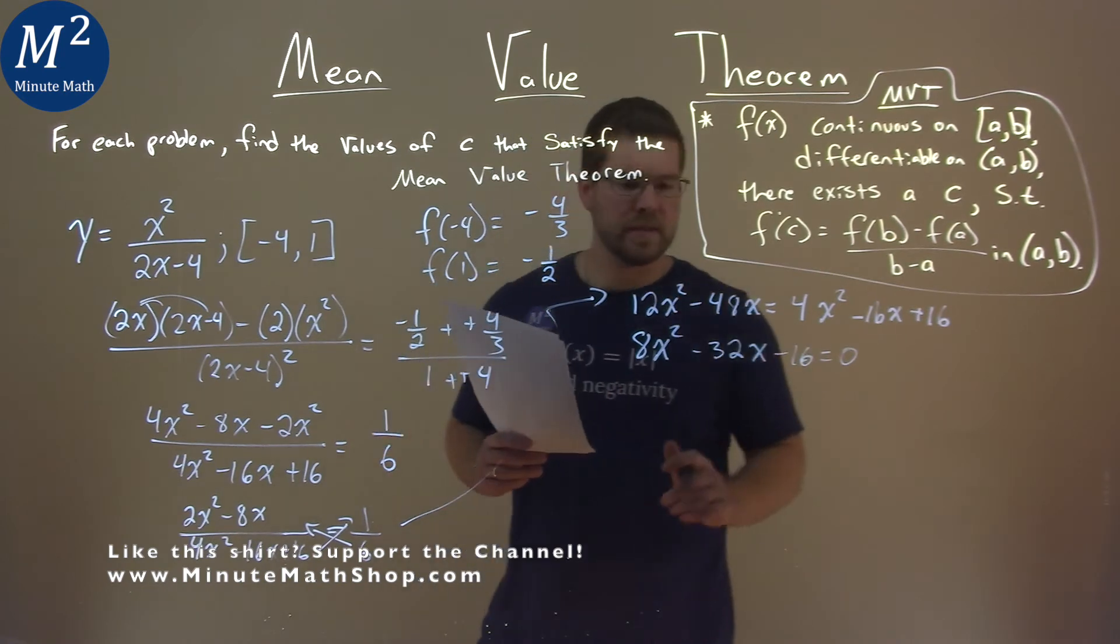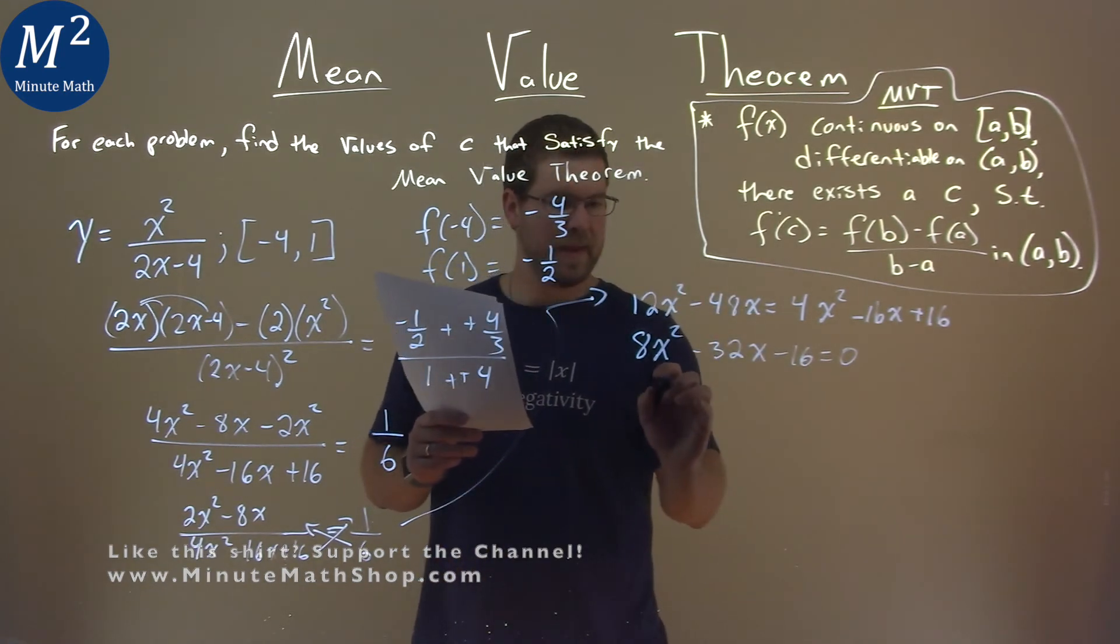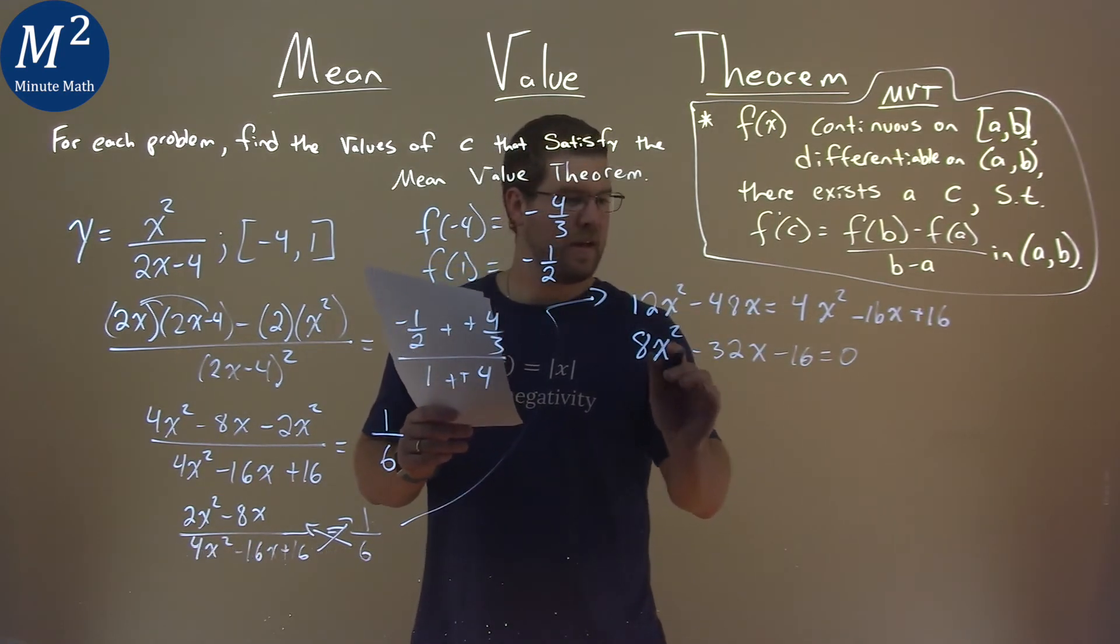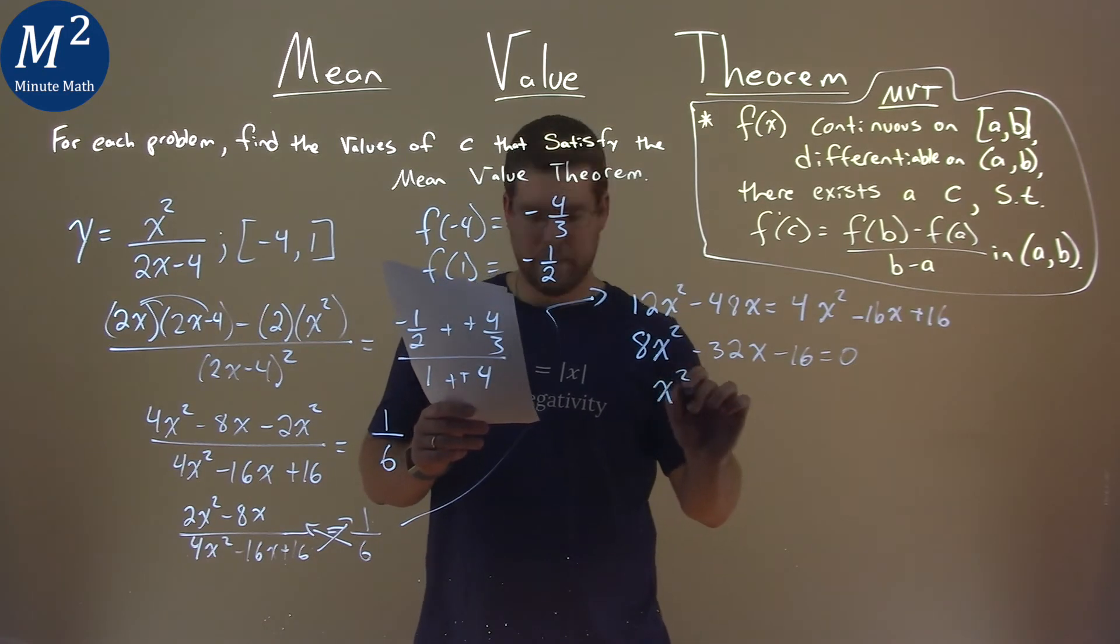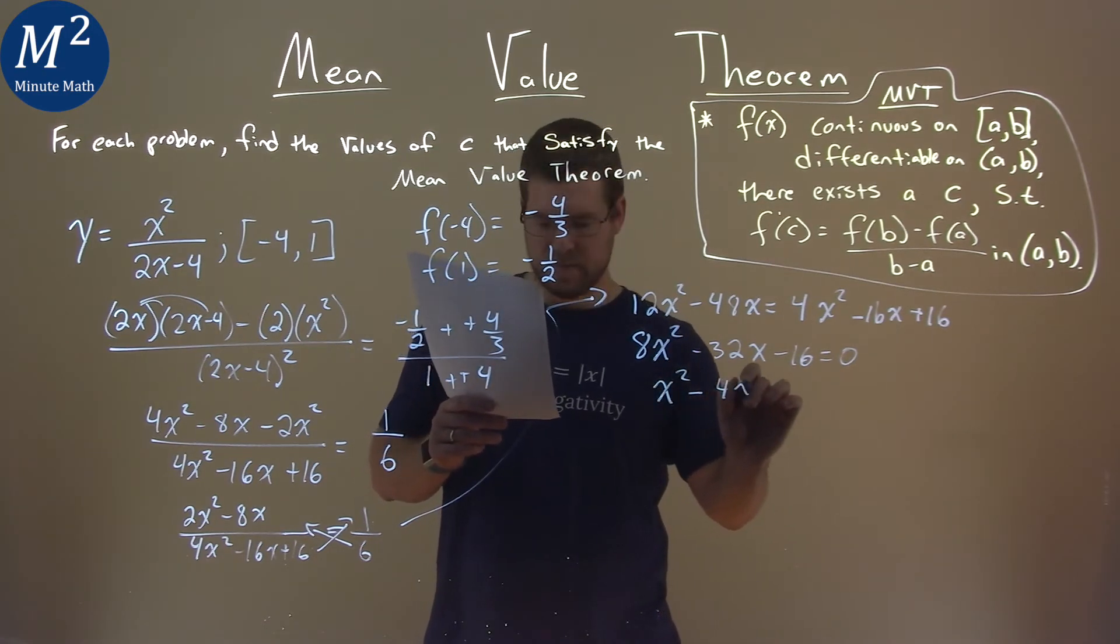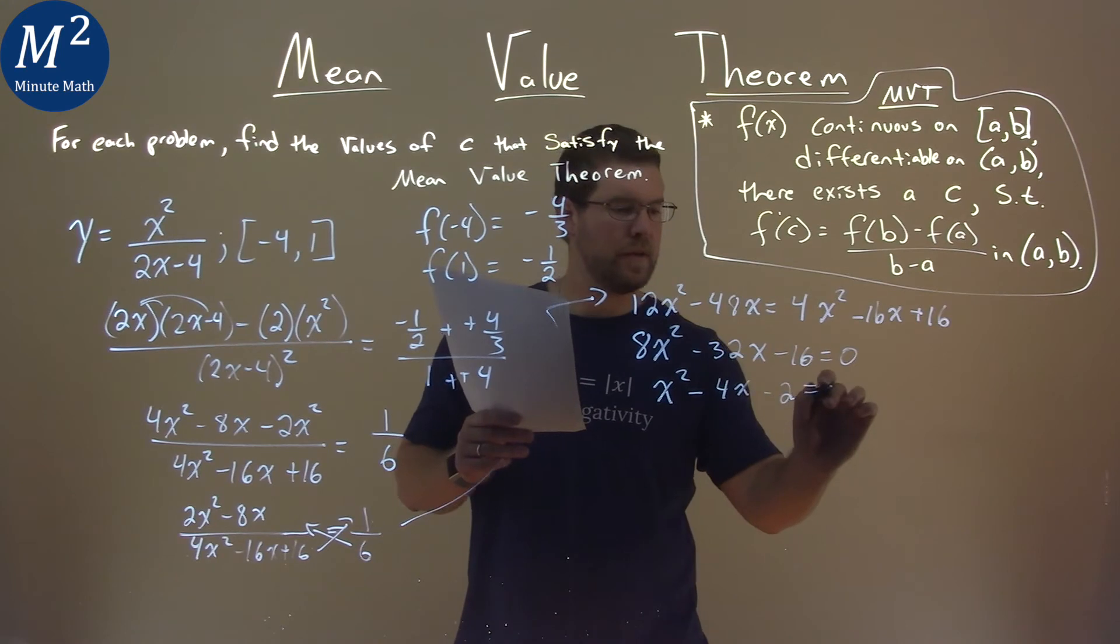8 goes into all parts here, divide everything by 8, and I have 8 in each thing. So, I have x squared minus 4x minus 2 equals 0.